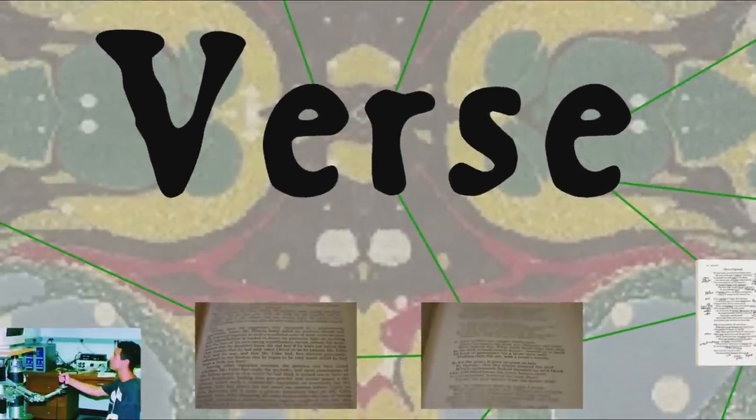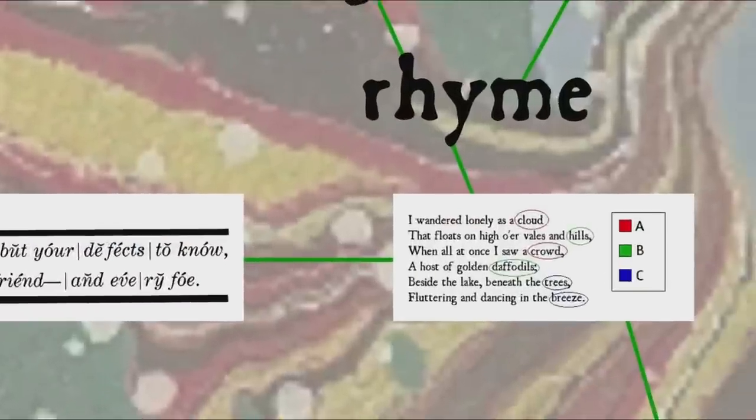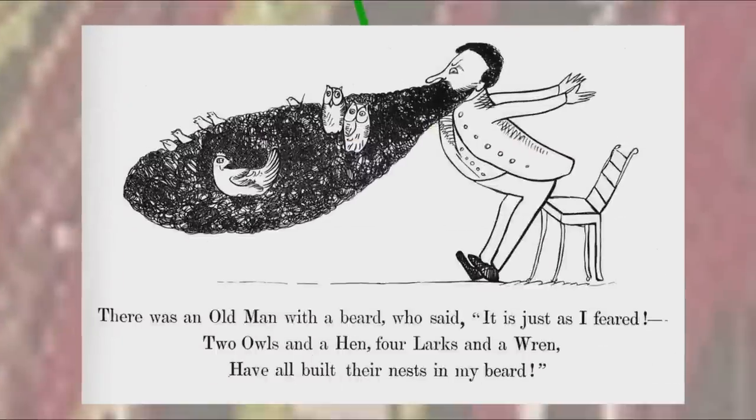Now what often defines a stanza or verse are elements like rhyme scheme and meter. Rhyme is a kind of repetition often found in poetry, in this case the repetition of the sounds at the end of words, and so a regular pattern of rhyming sounds at the end of lines of poetry can be used to organize it, as in there once was a man from Nantucket, well you get the point.